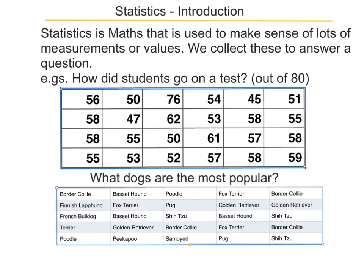Here is some data shown for test results, and we can answer this question: how did students go on a test? Underneath is some data answering this question: what dogs are the most popular? You can see people's favourite dogs are listed.